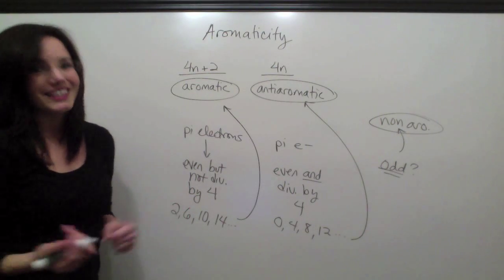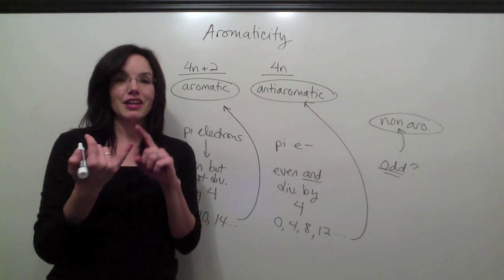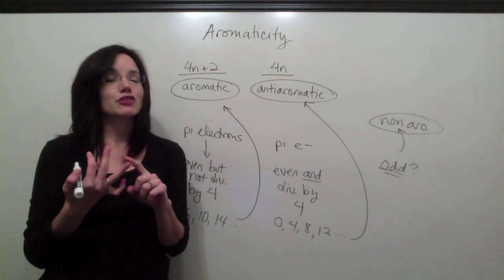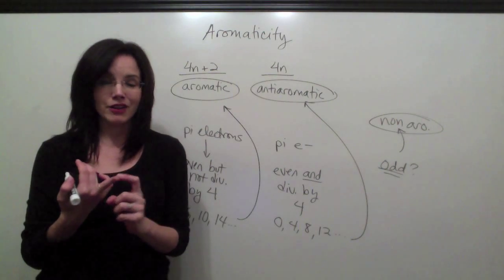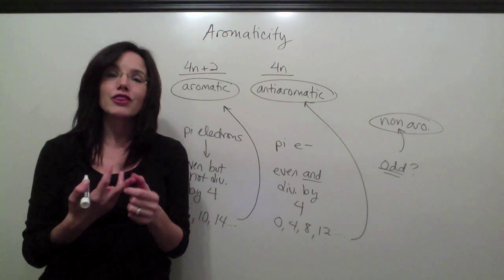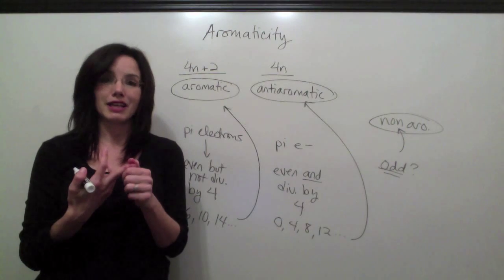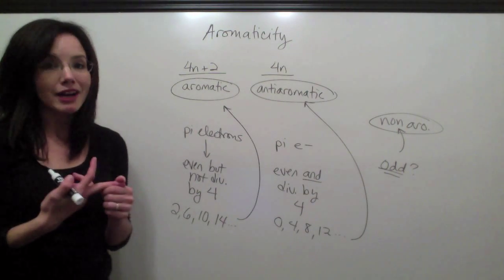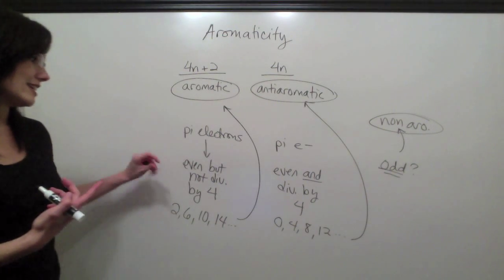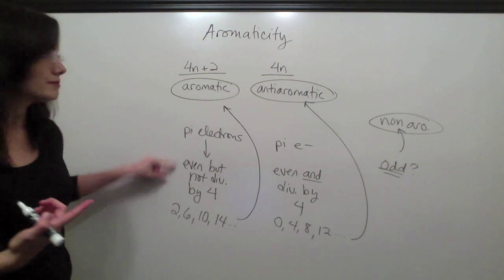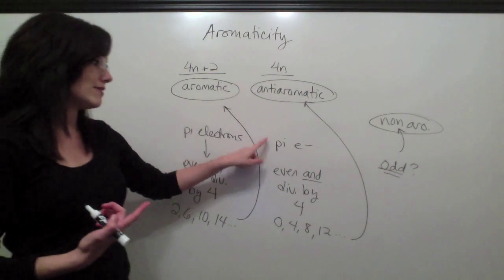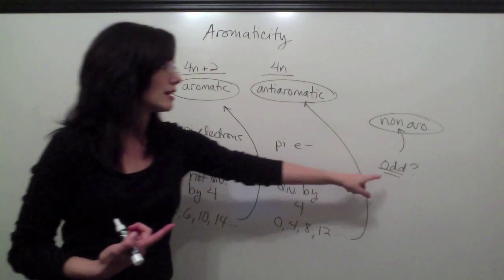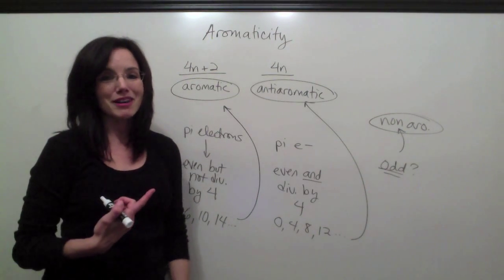So that's it. To summarize, you need to go through this list. First, check to see if your compound is a ring. Second, make sure that all the carbons in that ring are sp2 hybridized. Third, make sure that your compound is planar. If it's met all of those criteria, then you can count the number of pi electrons and check to see, is it even but not divisible by 4? Then it's aromatic. Is it even and divisible by 4? It's anti-aromatic. Or is it odd and non-aromatic? It's a really simple process.